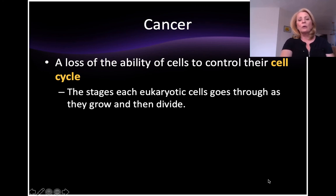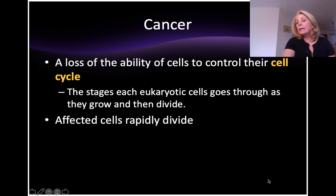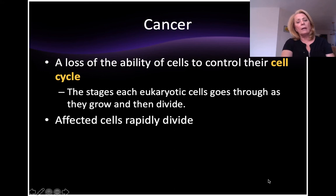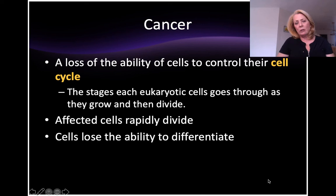Most cells are growing more often than they are dividing. This affects cells especially that are rapidly dividing — like hair cells or cells in your small intestine that help make up villi. Cells also lose their ability to differentiate. Once they don't go through the cell cycle appropriately, they can't actually do what they're supposed to do.